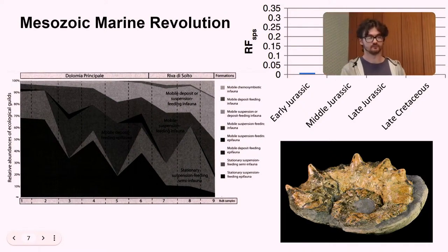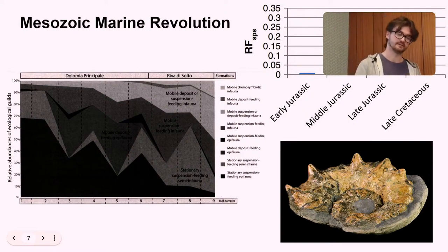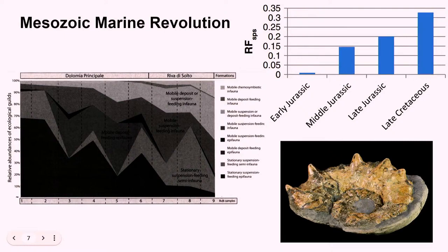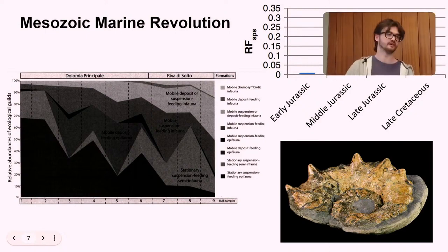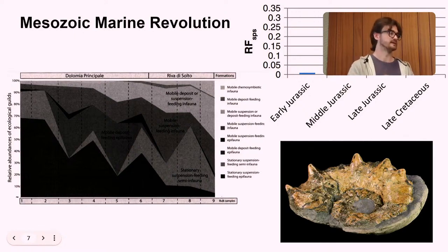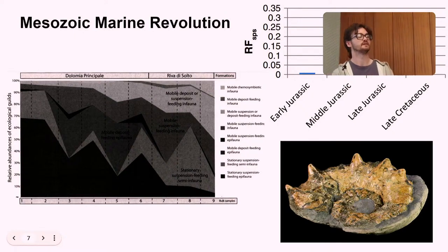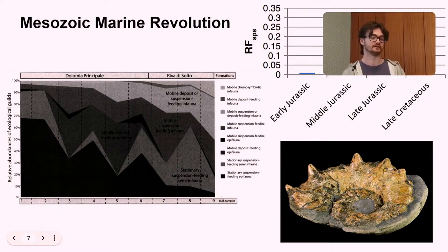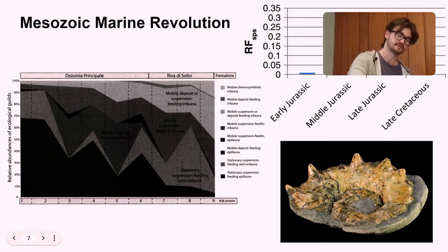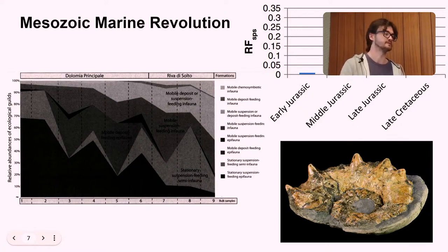So another way that we can see the Mesozoic marine revolution sort of working is in repair scars. So this chart here is repair scar frequency on ammonites through much of the Mesozoic. And you can see that repair scars are increasing in frequency through time. So that means that ammonites have been attacked and then surviving. Basically, they're not being killed straight away. And there's also an increase in ornamentation of ammonites. These ornaments increase the difficulty of killing the ammonite. So through time, we're seeing more repair scars and more ornamentation on ammonites, which indicates that they're basically becoming harder to kill.